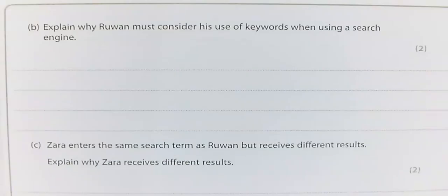4B: Explain why Ruwan must consider his use of keywords when using a search engine. The correct answer here is we are matching keywords to websites.